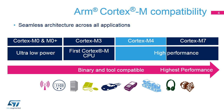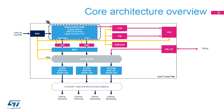The Cortex-M4 belongs to the high-performance product line. The processor core implements a Harvard architecture, as it supports concurrent instruction fetch and data load and store transactions. The instruction pipeline features three stages: fetch, decode, and execute. Conditional branch execution is accelerated by early fetching the target instruction.